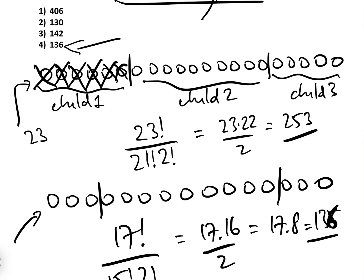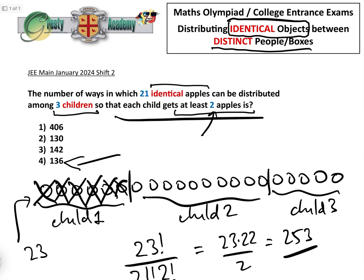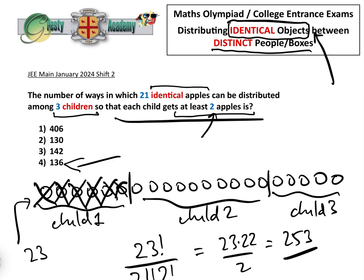So this is actually a very simple question, well option 4. This is actually a very simple question once you know that you have to use stars and bars when you are using identical objects into distinct boxes.